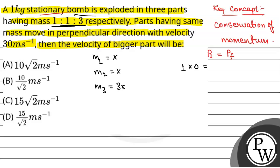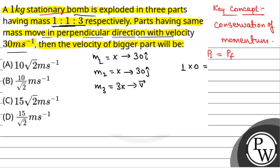We have been given that parts having the same mass move in perpendicular directions with velocity 30 meters per second. So m1 moves with velocity 30 î-cap, and m2 will move with velocity 30 ĵ-cap because the velocities should be perpendicular. And the velocity of the bigger part, let us call it v.